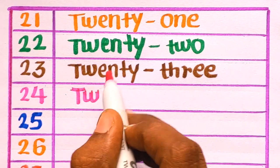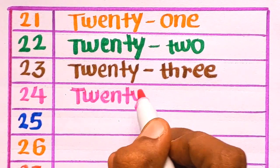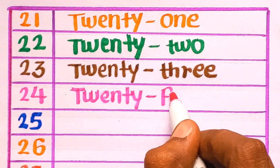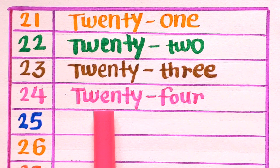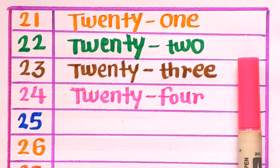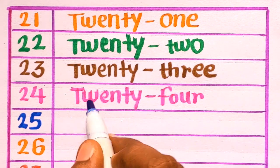T-W-E-N-T-Y-24. F-O-U-R-24. Pink color. Next number is 2-5-25.